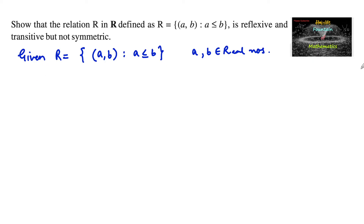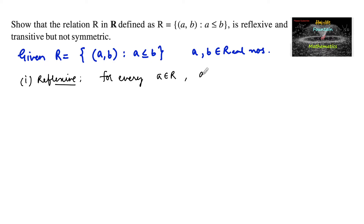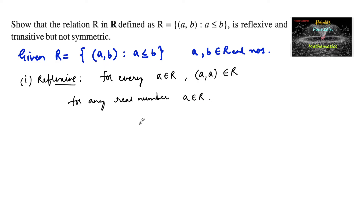Let us consider the reflexive case. The condition for reflexive is: for every real number a belonging to R, (a, a) must belong to the given relation. For any real number a, we can say that a ≤ a.